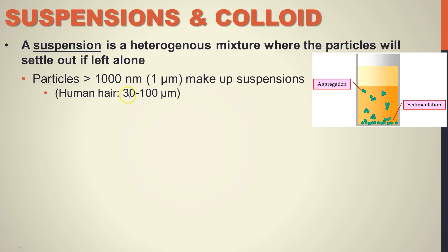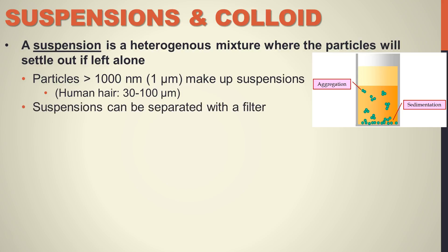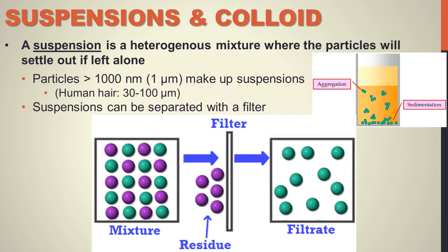For comparison, human hair is 30 times larger than the minimum size for a suspension. If you took human hair, cut it up small, and put it in water, it would settle to the bottom — the hair is going to settle because it's much larger. One micrometer and above — which is still pretty small — is going to make up a suspension. You can actually separate out a suspension with filters; suspensions do not survive a filter.